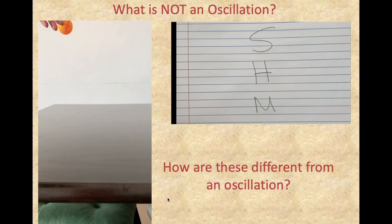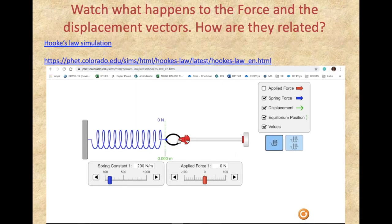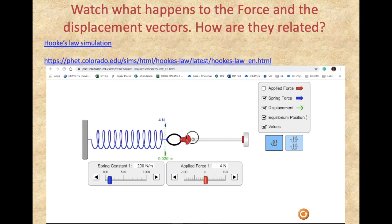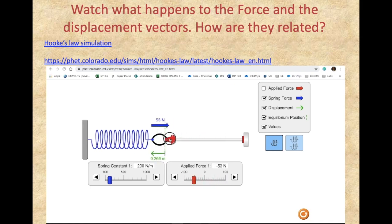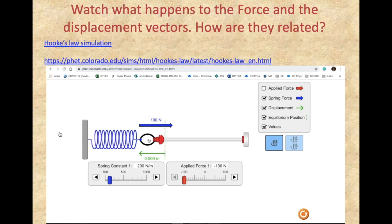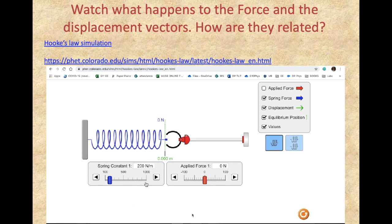Let's look at what these motions look like. This is a screen recording from the website phet.colorado.edu — I'm going to play this for you to observe. Watch what happens to the force and the displacement vectors and how they are related. In blue you are shown the force vector; the green arrow is the displacement vector. This line is what we call the equilibrium point — that's where the spring is not pulled towards any side at all.